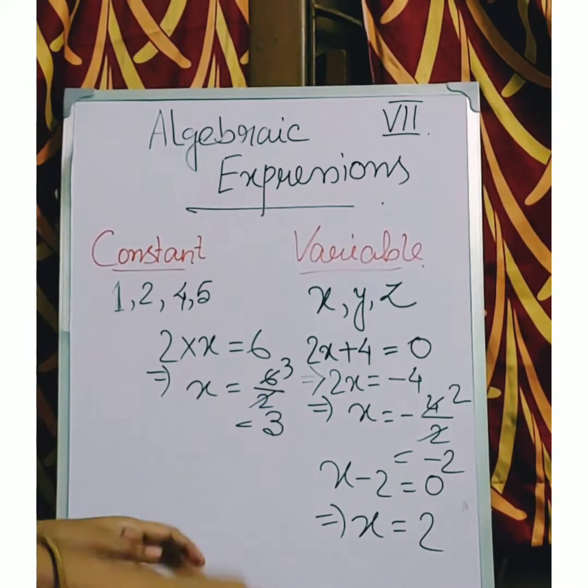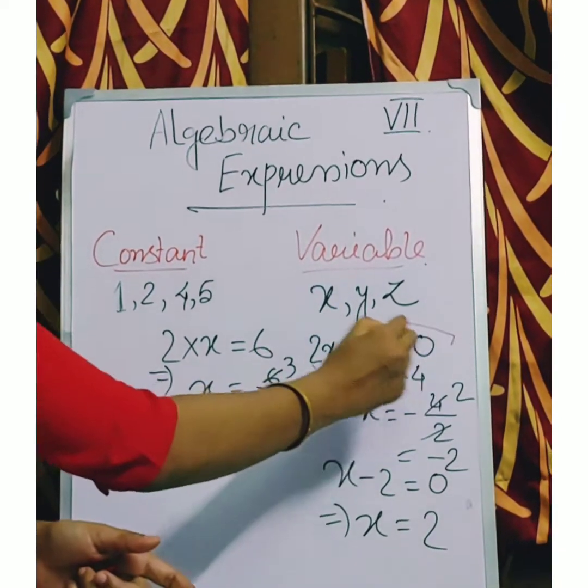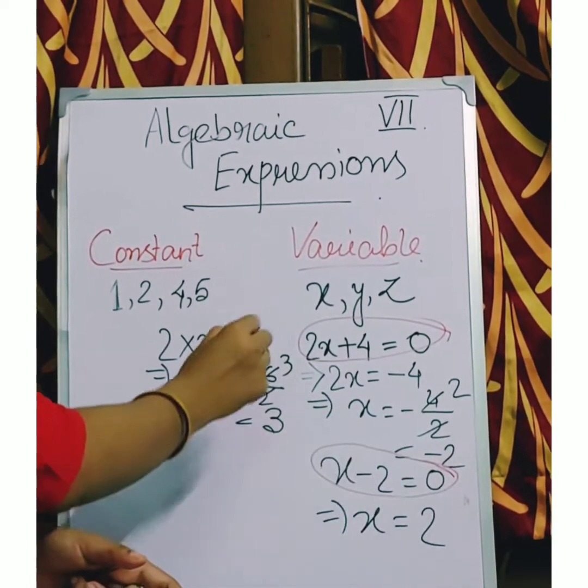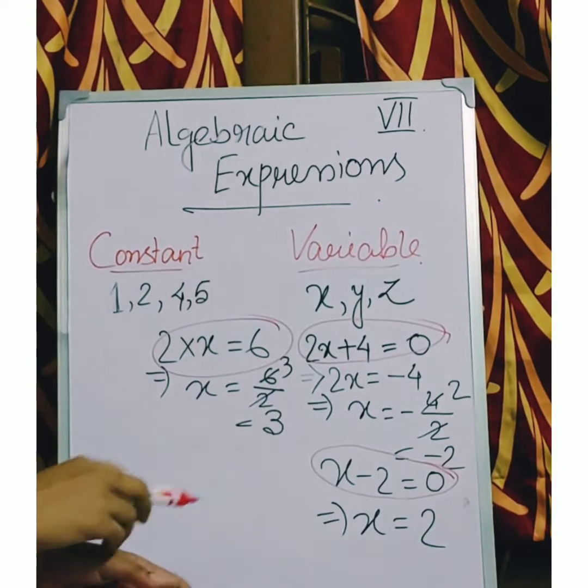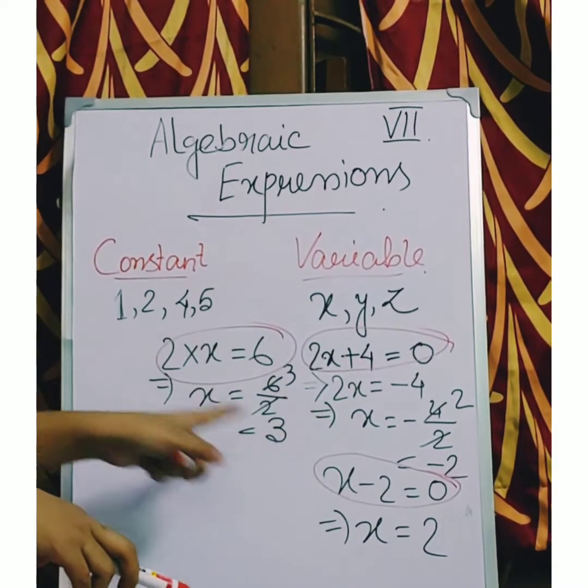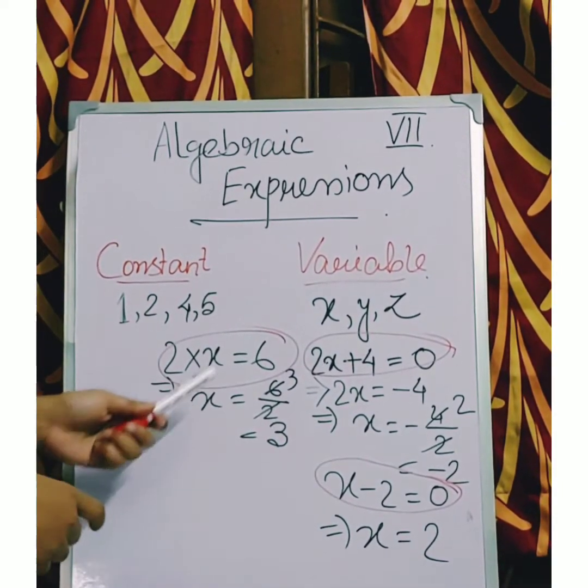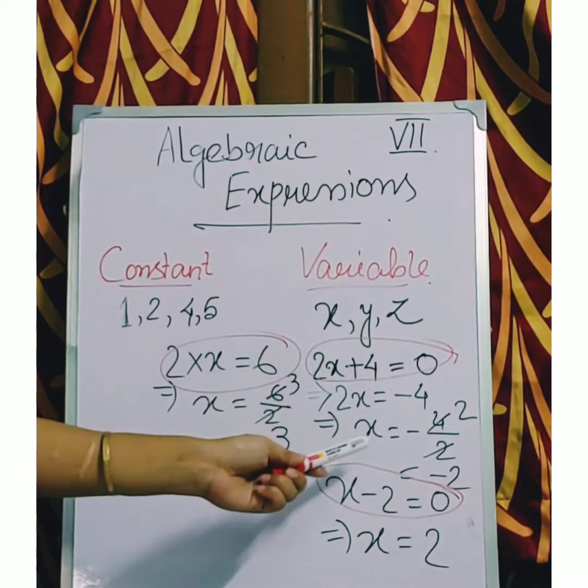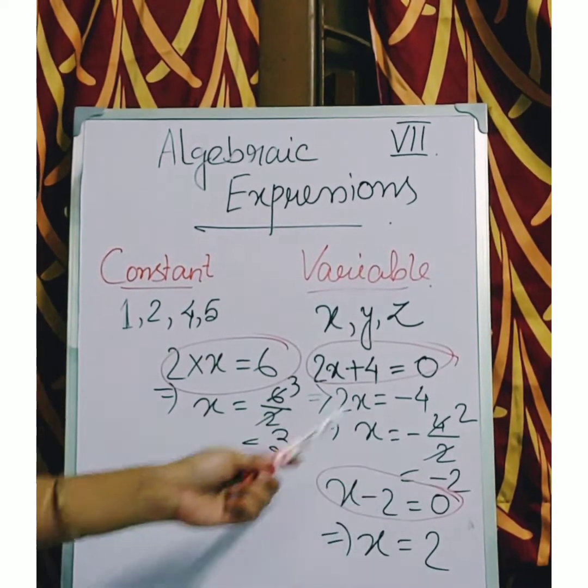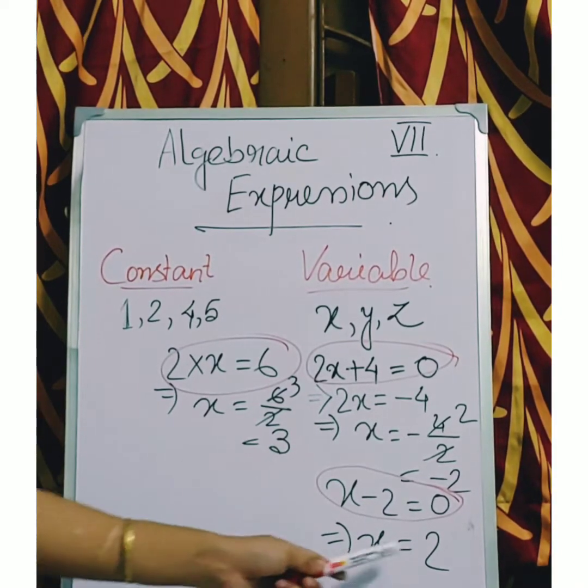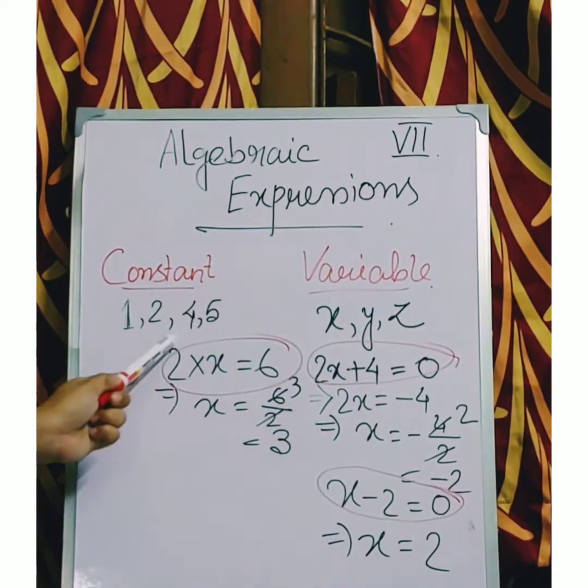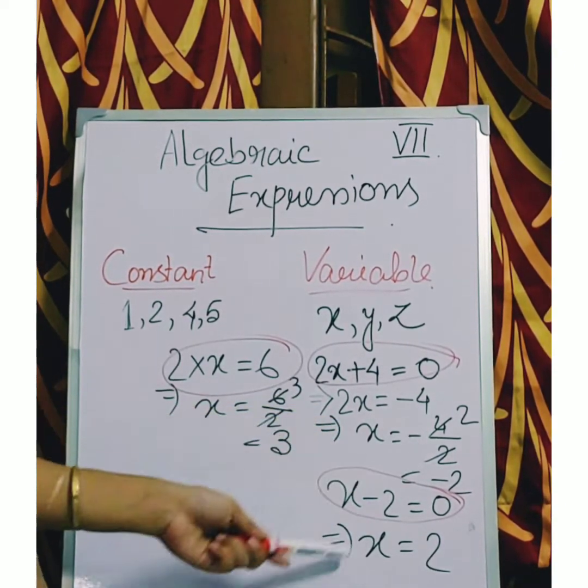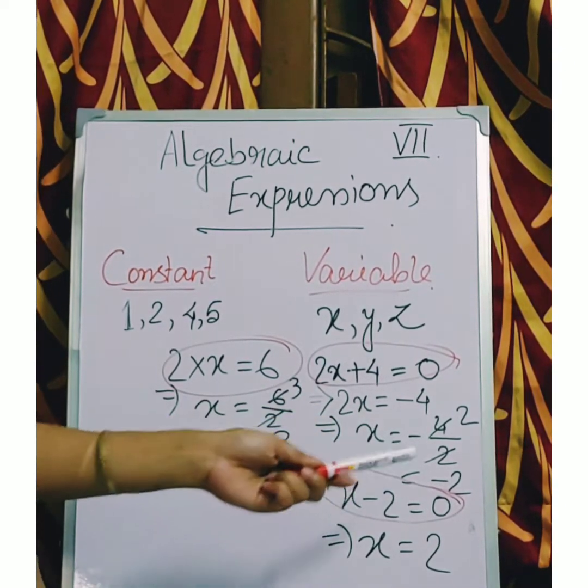Now see I have written here 3 equations. One is this, one is this, and one is this. In all 3 equations I have taken variable is x. But in first equation the value of x is minus 2, in second equation value of x is plus 2, in third equation value of x is 3. That means in 3 different equations the value of x is changing.